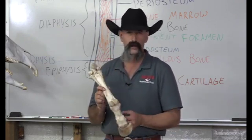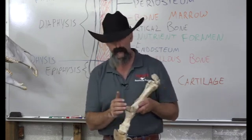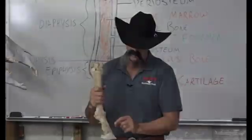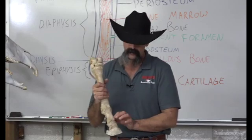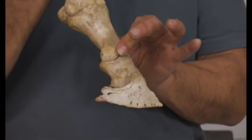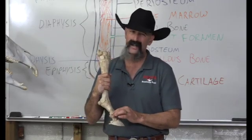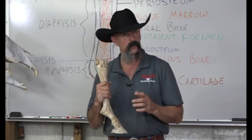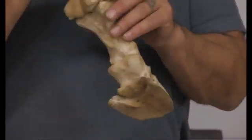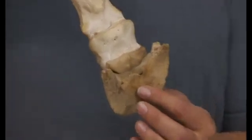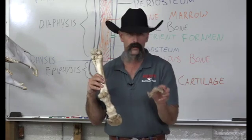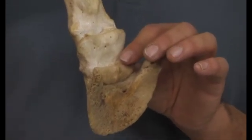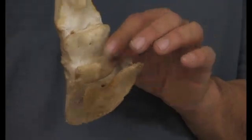The sesamoid bones change the direction of pull, give a larger area of attachment for the suspensory ligament above and sesamoid ligaments below, and create more surface area in the fetlock joint — very important bones. The joint between the long pastern and short pastern is called the pastern joint or proximal interphalangeal joint. It's a relatively immobile hinge joint with some plane joint characteristics. Then there's the coffin joint between the distal end of P2 and the proximal end of P3, with a navicular bone on the back.